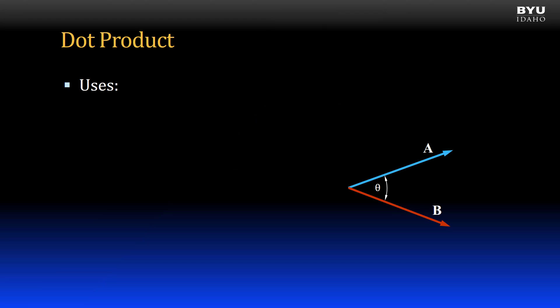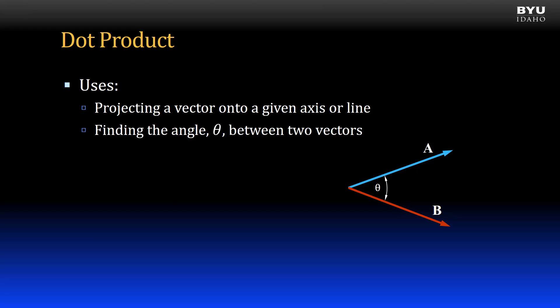Let's focus on the dot product for a minute, then we'll go back to that example. Dot products are very useful in statics because they let us project one vector onto another axis, as in the bolted connection example. Dot products also allow us to find the angle between two vectors.